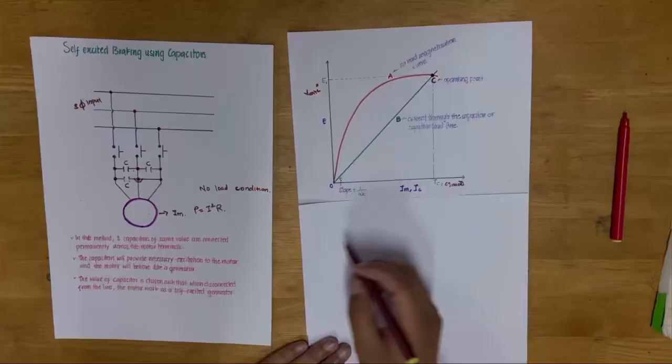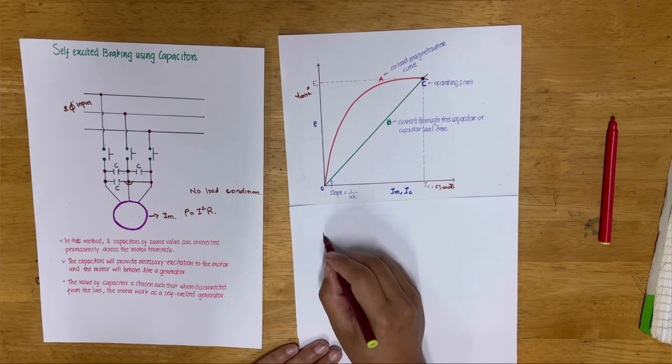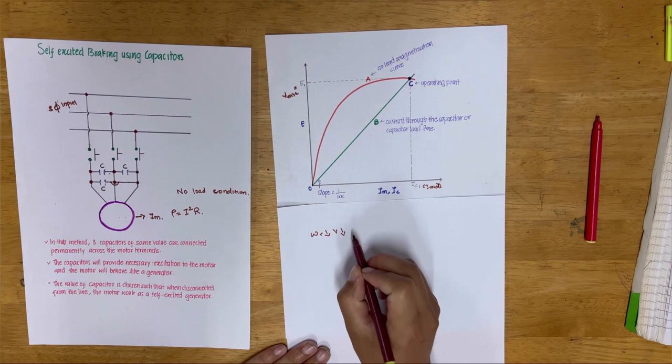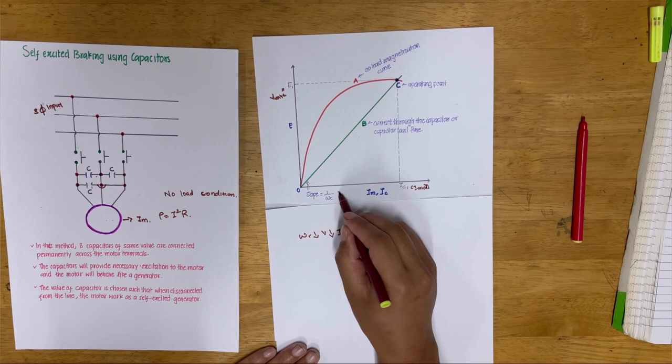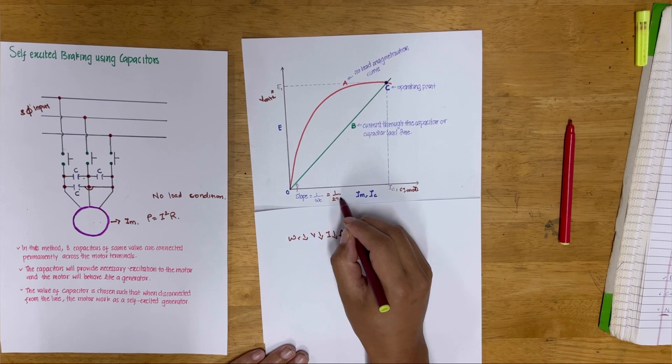During braking, the speed decreases. When the speed decreases, the induced voltage also decreases, and as the voltage decreases, the current also decreases, and thereby the frequency also decreases. Since the slope equals 1 over ωC, and ωC equals 2πfC, as the frequency decreases, the slope increases.